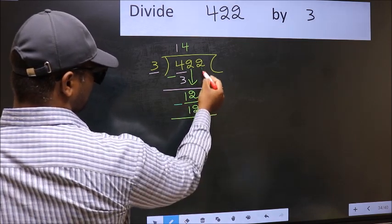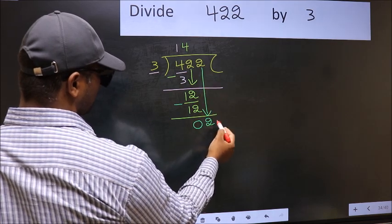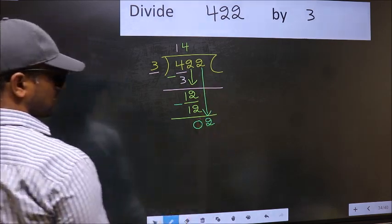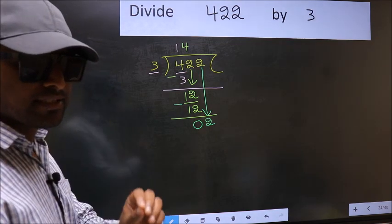After this, bring down the beside number. So 2 down. After this step, the mistake happens. And the mistake is this.